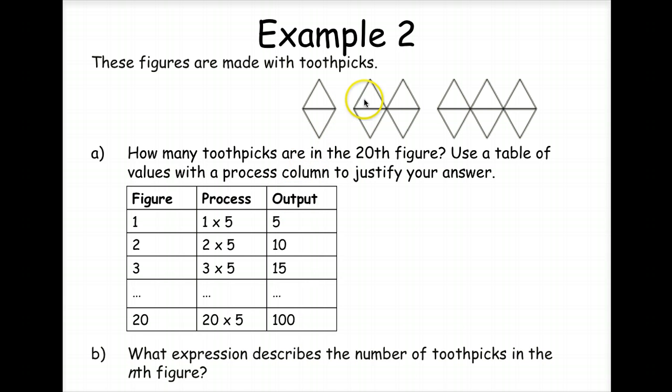In figure two, we have two here, each has five toothpicks, so we can say our process is two times five, so we've got a total of ten toothpicks.